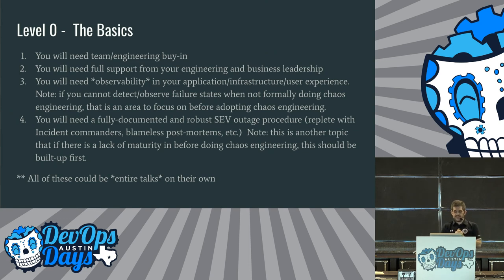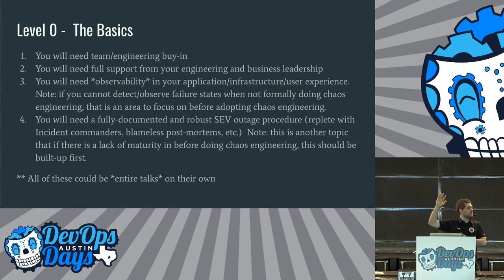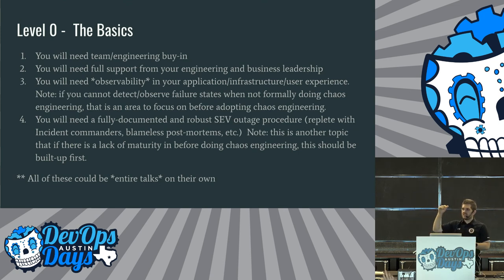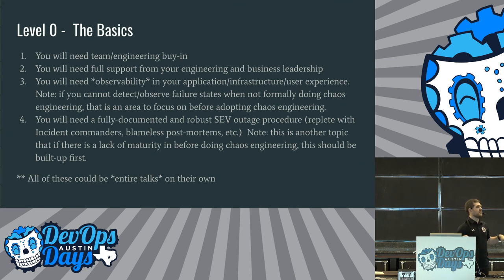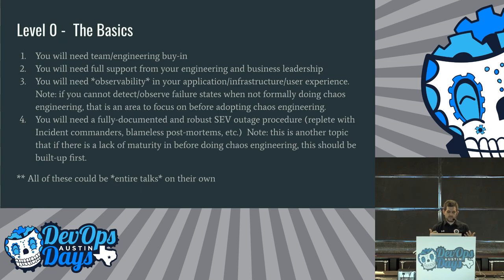If you can't detect or observe failure states when you're not formally doing chaos engineering, you'll need to adopt that. You also need a fully documented and robust SEV or outage procedure. How many people feel comfortable with their observability? How many have a codified SEV outage process where you know exactly what gets paged and how it escalates? Very few people — so that's something to discuss with your organizations. These could be entire talks on their own. Level zero is a big bucket to fill, but you have to have maturity here before you can move on.